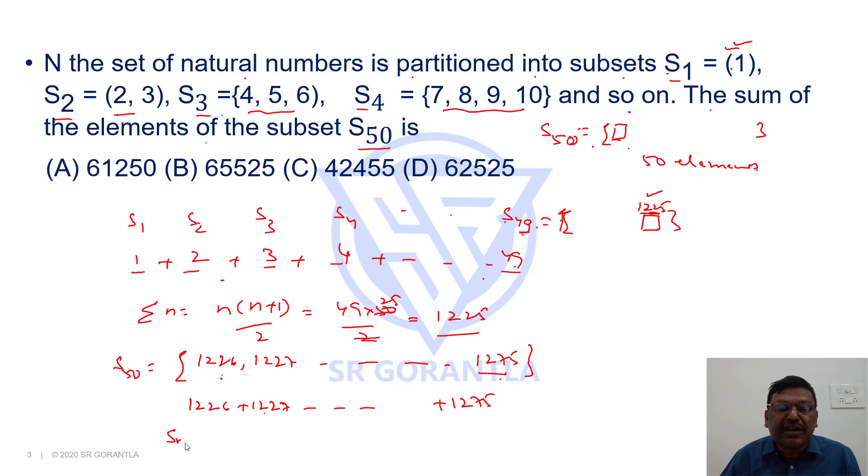Hence, sum of n numbers in arithmetic progression is n by 2 into a plus l. This is the formula. n is the number of elements, a is the first number, l is the last number.